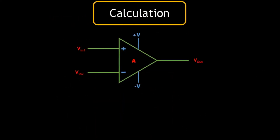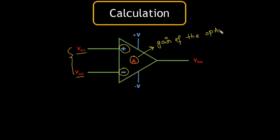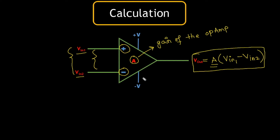Now let's look at some calculations. Suppose Vin1 and Vin2 are our input voltages: Vin1 is the non-inverting voltage and Vin2 is the inverting voltage, and A is the gain of the amplifier. The output will be: Vout = A × (Vin1 − Vin2). The difference between the two input voltages is multiplied by the gain to produce the output. Since Vin2 is the inverting terminal, we subtract it from Vin1.